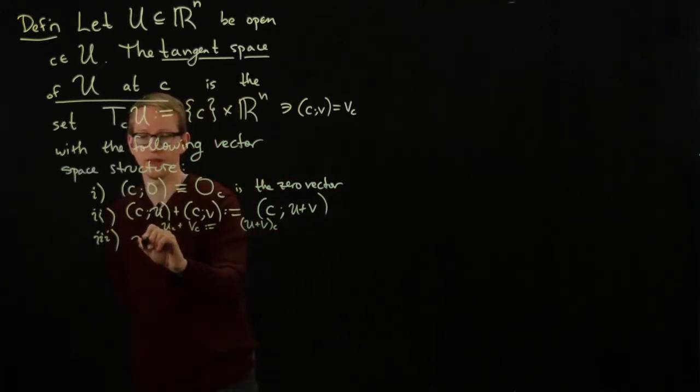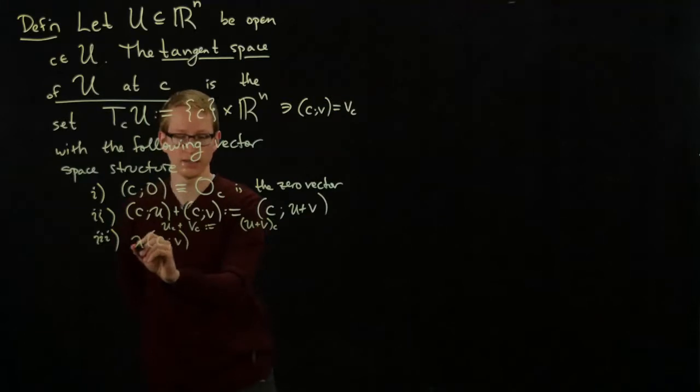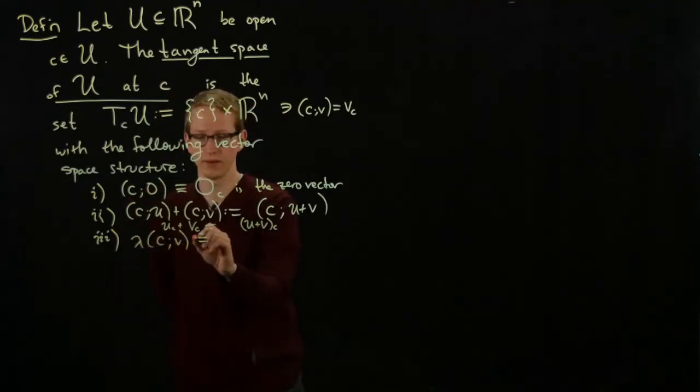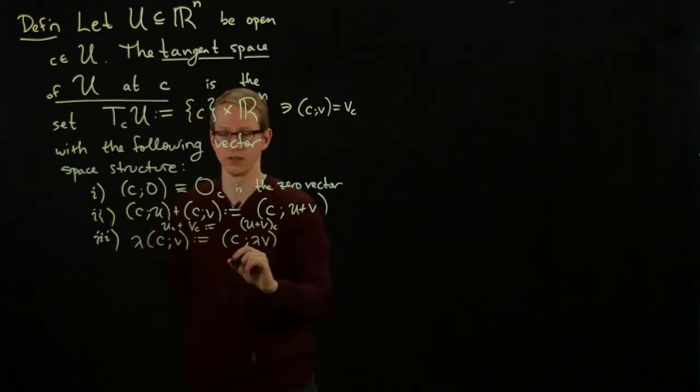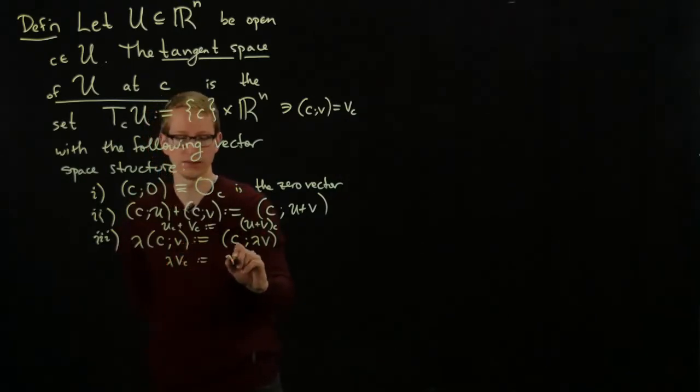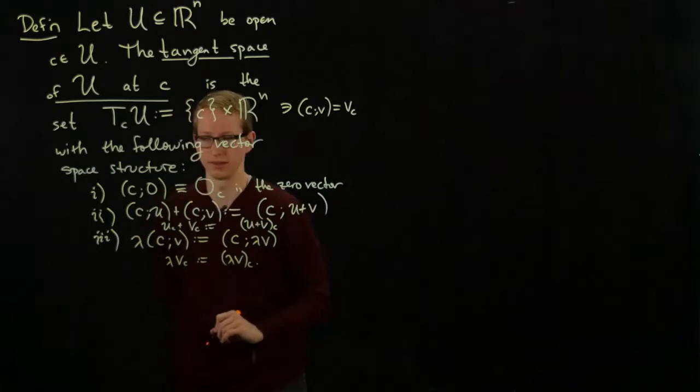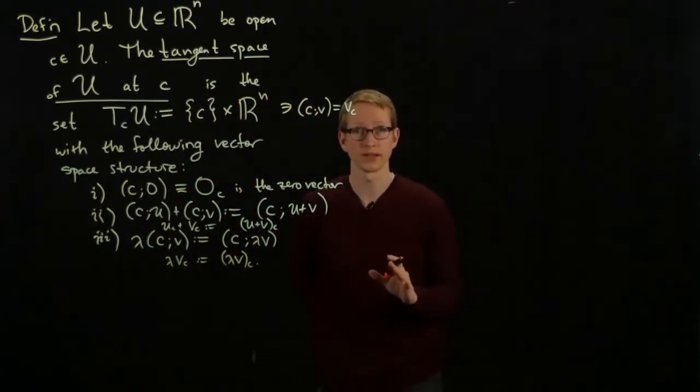And thirdly, if we multiply a vector (c,v) by a scalar lambda, then this is defined to be (c, lambda times v). Or in the notation with subscripts, this would read as lambda v_c is (lambda v) at c. So you should check that this defines a vector space.